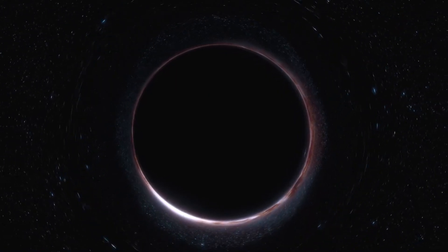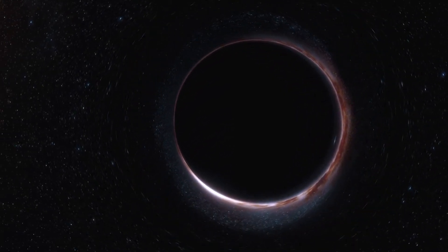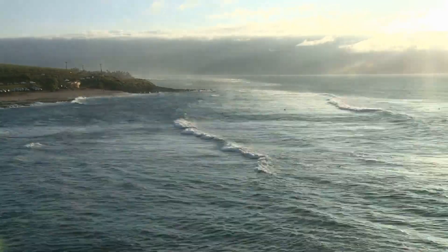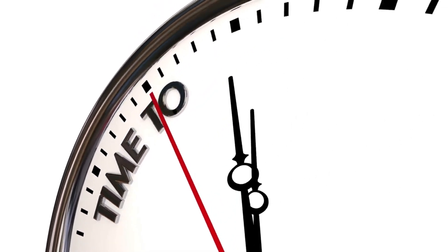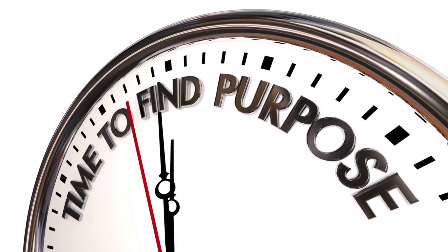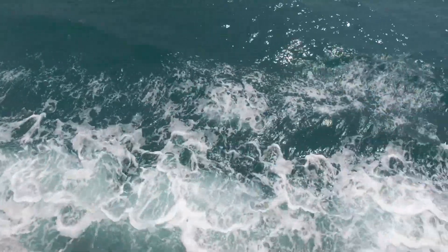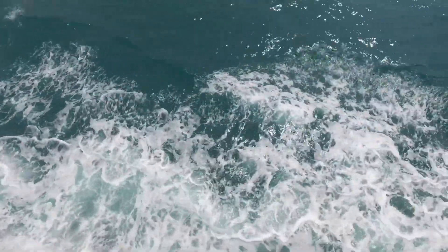When observing a pulsar, the presence of gravitational waves can cause the spacetime to become distorted, altering the arrival time of the pulses. As the distance covered by the radio pulses changes, the timing delay can provide valuable information about the direction from which the gravitational waves originate, provided the pulsar's location in the sky is accurately known.